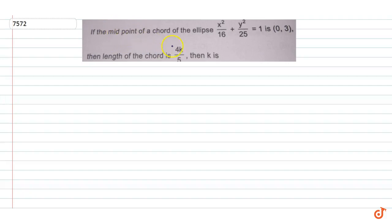In this question, if the midpoint of a chord of the ellipse x squared by 16 plus y squared by 25 equal to 1 is (0, 3), then length of the chord is 4k. Then k is what?